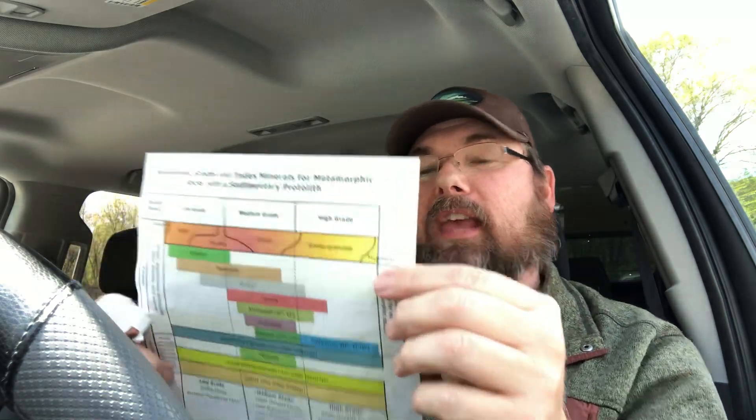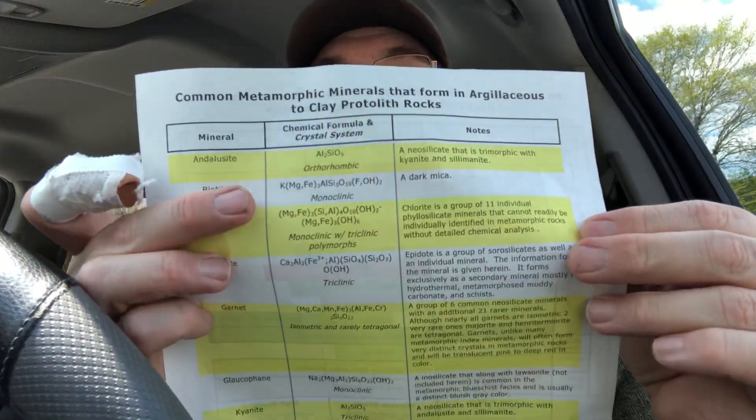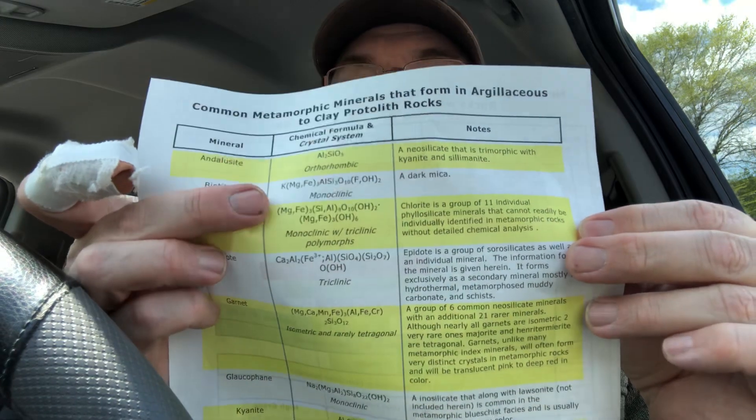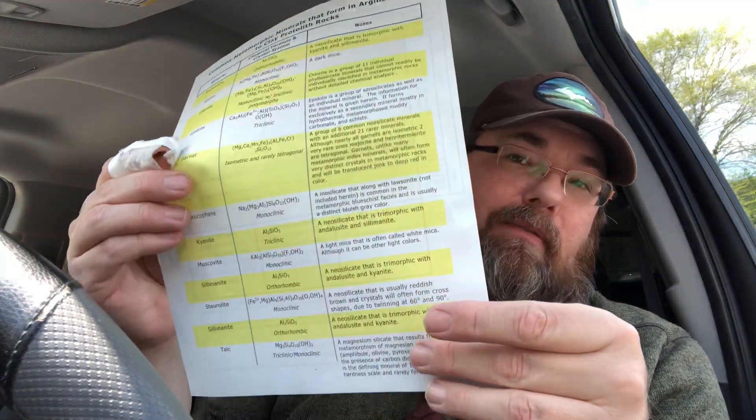A lot of times certain minerals won't be present — like biotite. You might not see biotite in your metamorphic rock. Why? Because the chemistry isn't there. If you don't have a clay-rich rock with a lot of potassium, you're not going to get biotite — it's just not going to form. So the chemistry has to be there, and that's why we use mudstones: because they have the most diverse chemistry out of most sedimentary rocks.